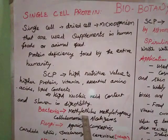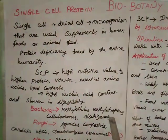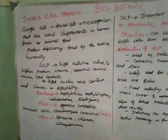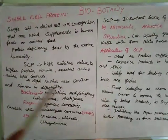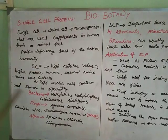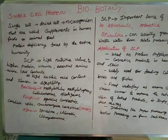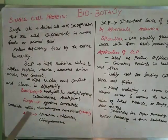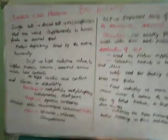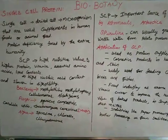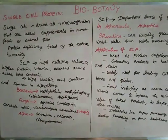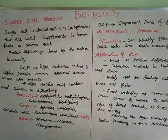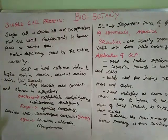For bacteria, organisms like Methylophilus, Methylotropos, Cellulomonas, and Alcaligenes are used in single cell protein preparation. For fungi, the organisms used include Agaricus campestris, Candida utilis, and Saccharomyces cerevisiae yeast.